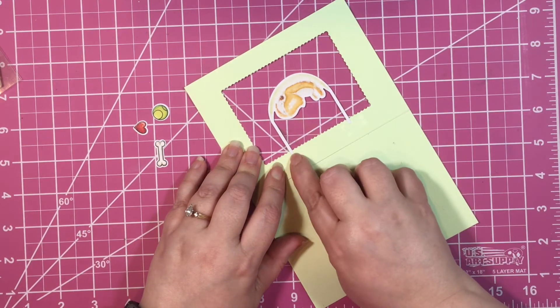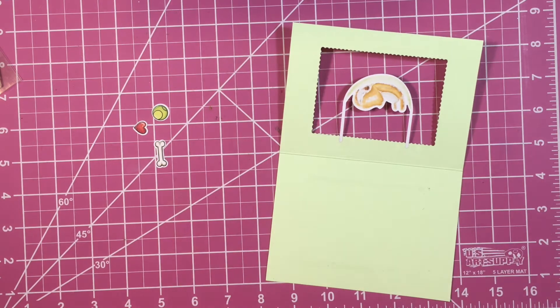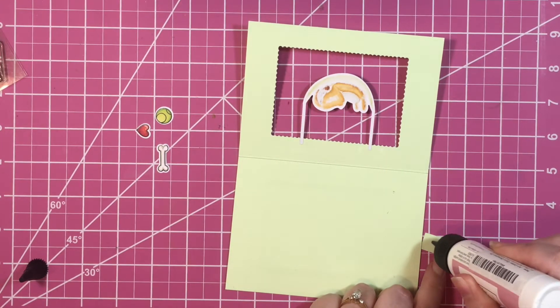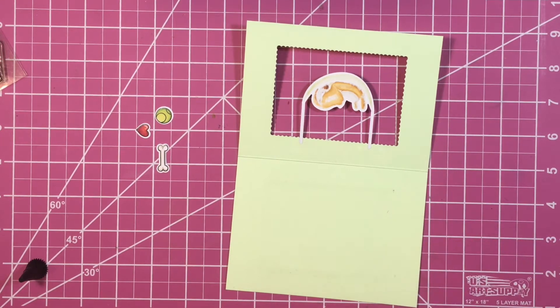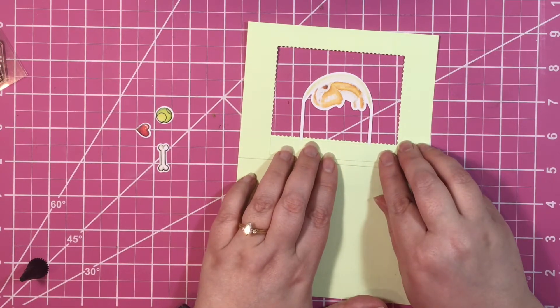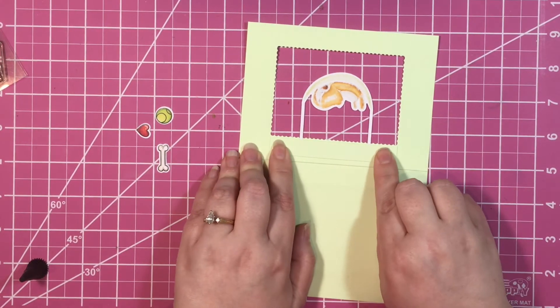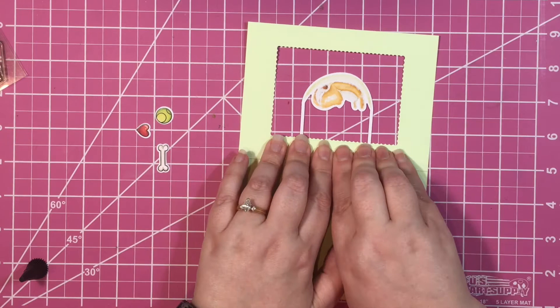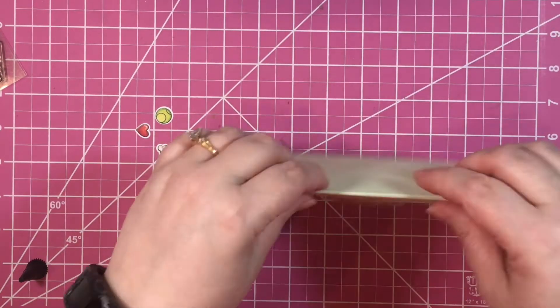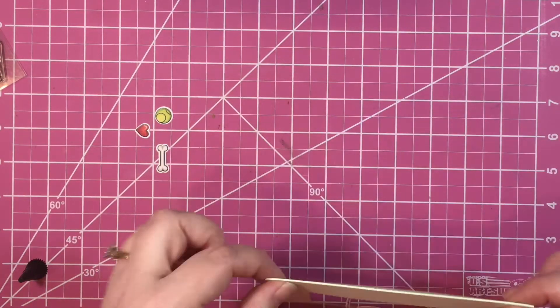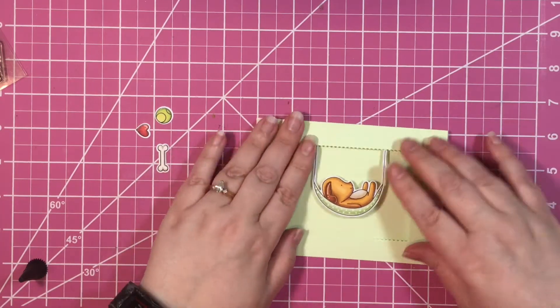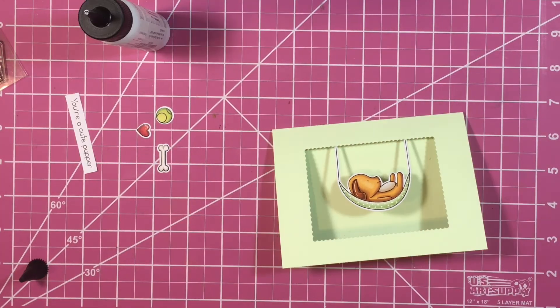I'm just taping him to the top of the inside of the card, and then I take a piece of that same colored cardstock and glue over top so that you can't see where it's taped on. Now you can see how he kind of swings in that open window.